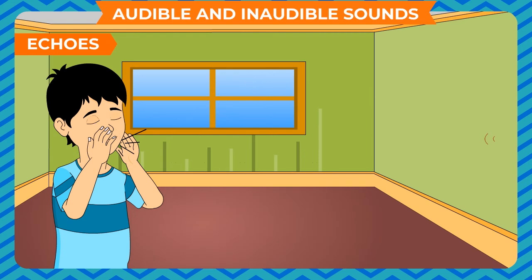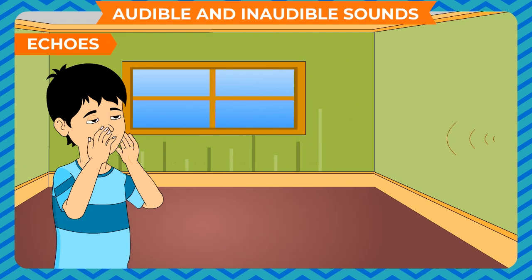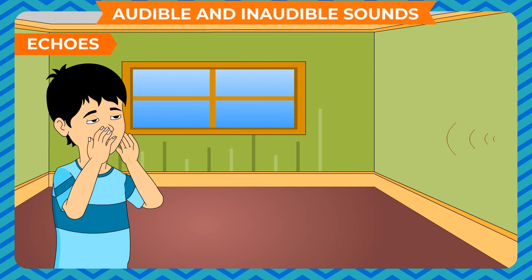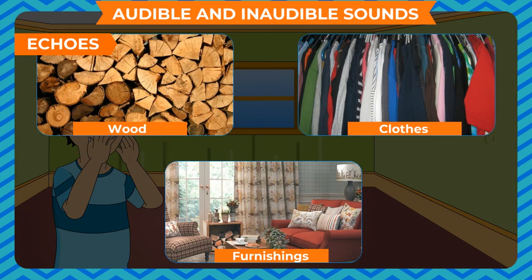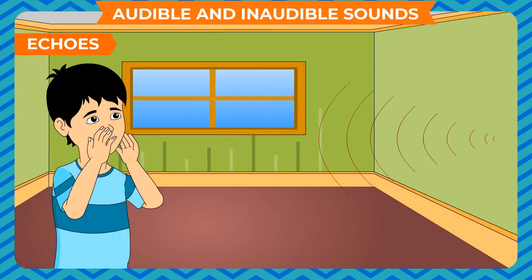Echoes are reflected sounds. We do not hear them all the time, even though there are plenty of sound reflections around us. This is because we can distinguish between two sounds only if there is a time lapse of 1/15th of a second. Most things around us — wood, cloth, and furnishings — are poor reflectors and good absorbers of sound. If this were not so, our voices would reflect again and again from walls and floors, making it difficult to converse.